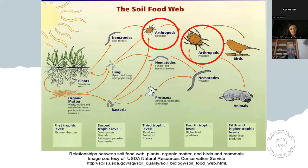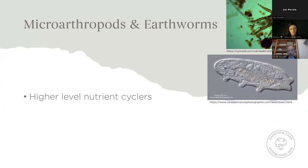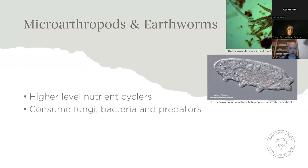The other things to look at are the arthropods and earthworms — both micro and macro arthropods. They come in and consume whatever they can fit in their mouth, and they're the higher-level nutrient cyclers. They consume fungi, bacteria, and other predators. Larger macroarthropods can consume microarthropods, and earthworms can consume all of them.